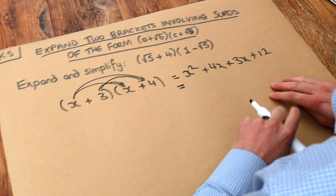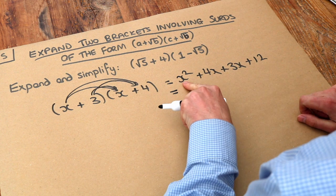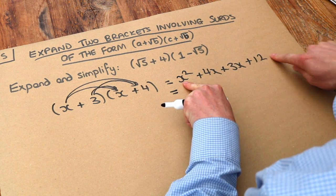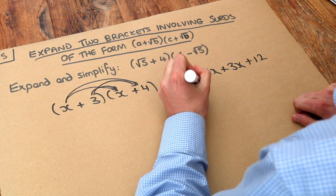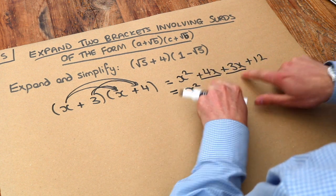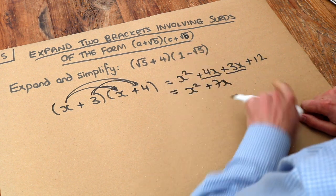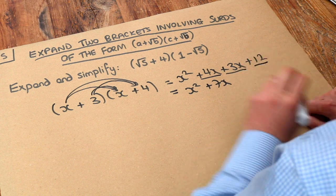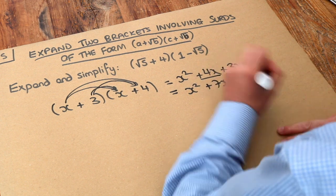And then we could just simplify by collecting like terms. That's the only x squared term, there's no other x squared terms, that just stays as it is. But we've got two x terms. So 4x plus 3x is 7x. And then we've got what's known as a constant term, the plus 12, it has no x on it, and you get that.